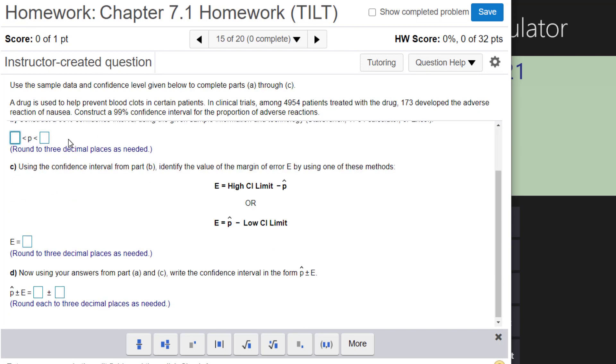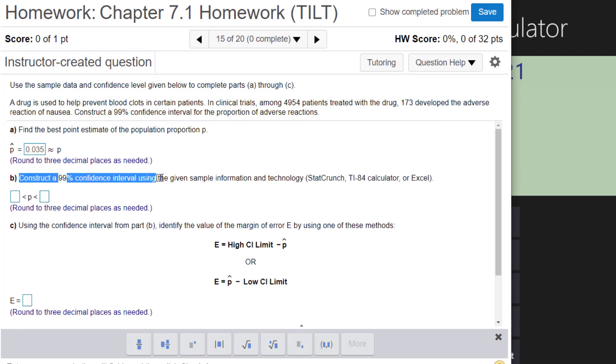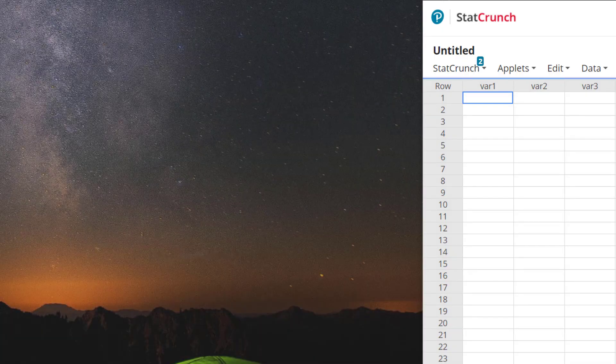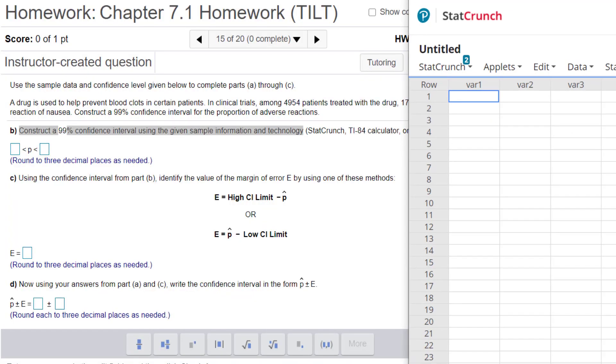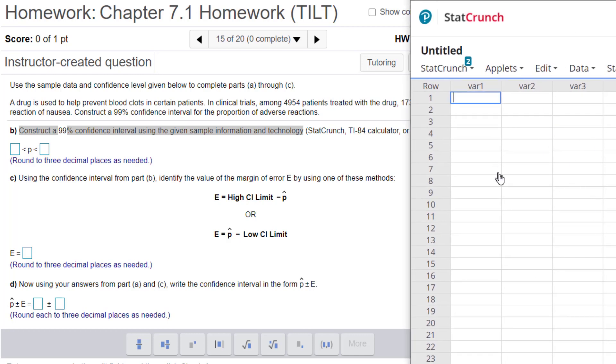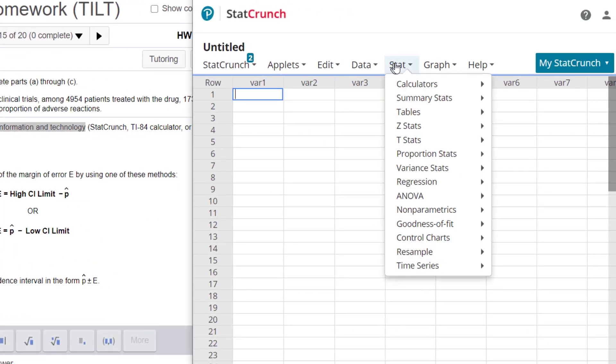And of course to do the confidence interval itself for part B we do need to go to StatCrunch or some kind of technology to find the confidence interval. So this is where I definitely suggest having StatCrunch kind of pulled up to the side of your homework so it's easy to kind of access your StatCrunch. Now to make a confidence interval we're going to go to Stat and then we want to go to Proportion Stats.